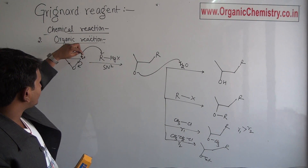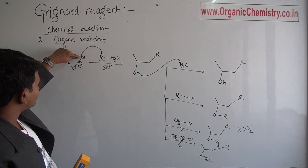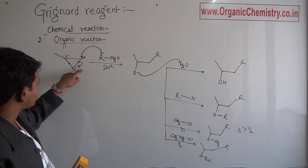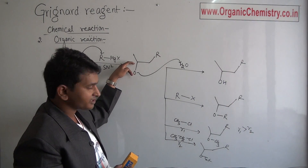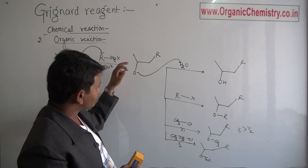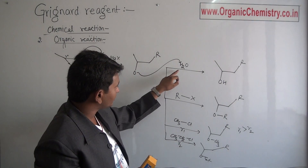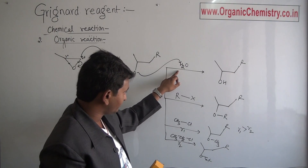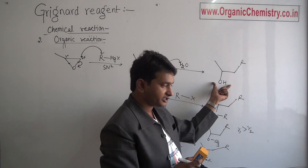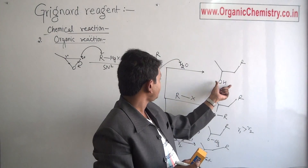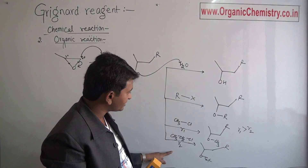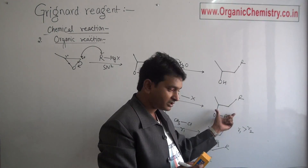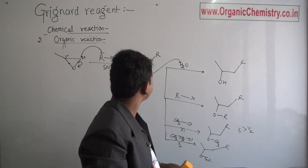The Grignard reagent can attack over this carbon and break this bond to form an alkoxide. This alkoxide may abstract a proton from the medium to give alcohol as a product, or it may attack over alkyl halides to give ether as a product.